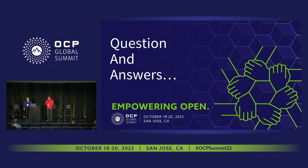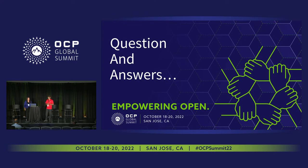Q&A: A second questioner asks about the decommissioning flow, noting it seems like a flavor of ownership transfer and asking if it requires a signed token from the current key to unlock. The speaker confirms: the decommissioning capsule is signed by the root key, not the code signing key. Typically OEMs hold the root key and ODMs own the code signing key. Decommissioning is a decision made by the platform owner who holds the root key.